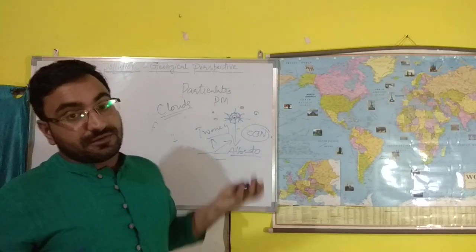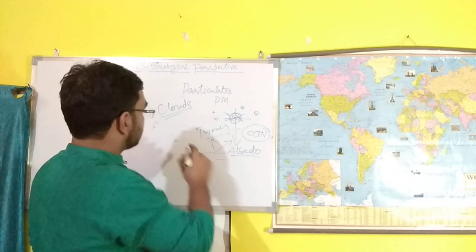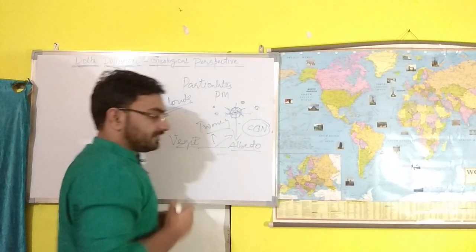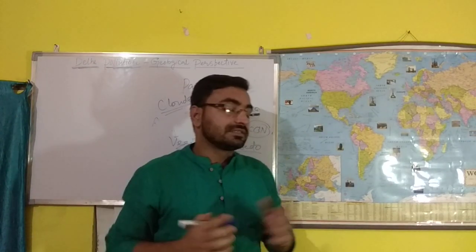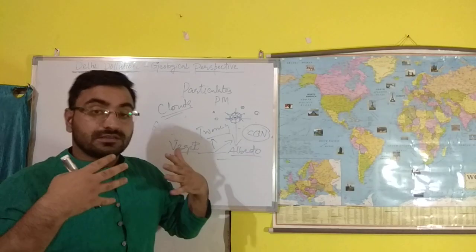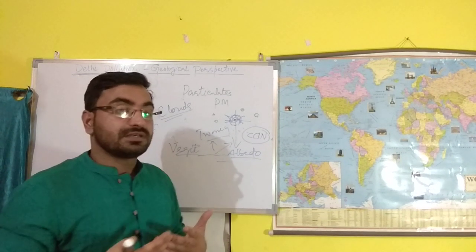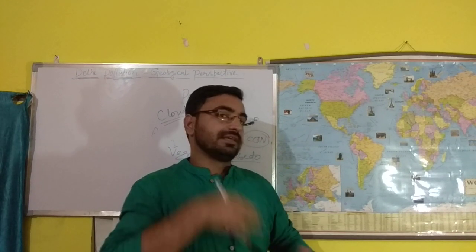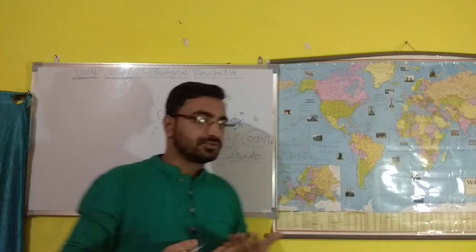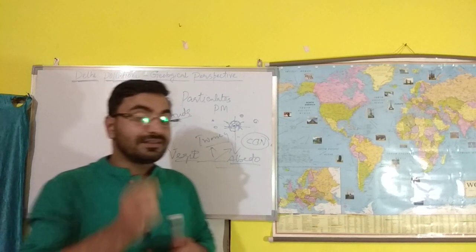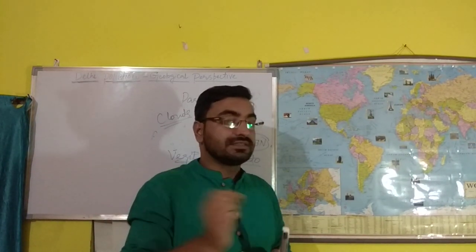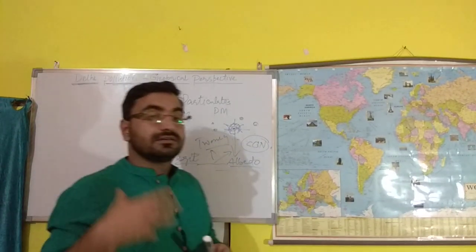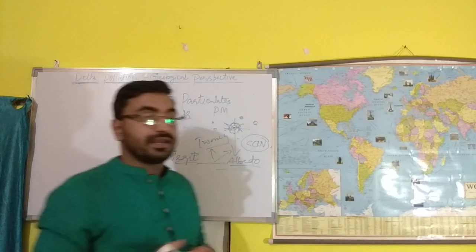Another effect of pollution is its effect on vegetation. When there are these many pollutants in the atmosphere, the stomatal openings of the leaves of plants get closed. This is actually interfering with photosynthesis. This is how these pollutants affect vegetation as well.